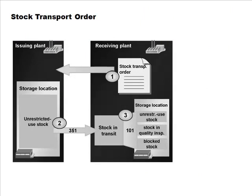In a stock transport order, the receiving plant is the one that initiates it — similar to a purchase order. The issuing plant sends the material, it goes into stock in transit, and then it is received at the other plant's storage location, just like receiving from a vendor. A stock transport order is essentially an internal purchase order.